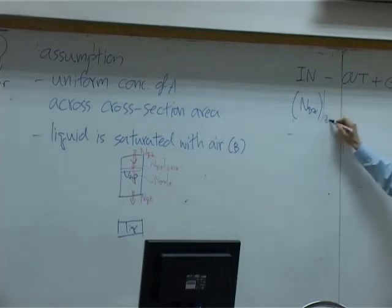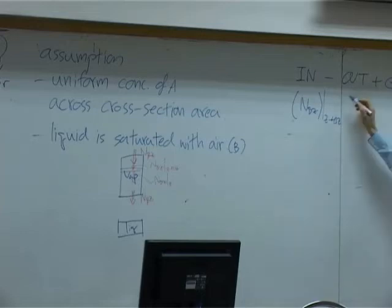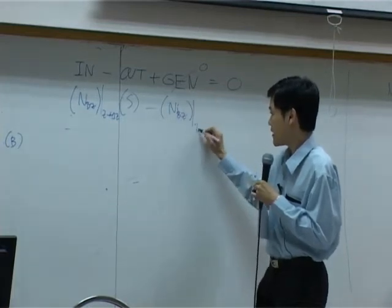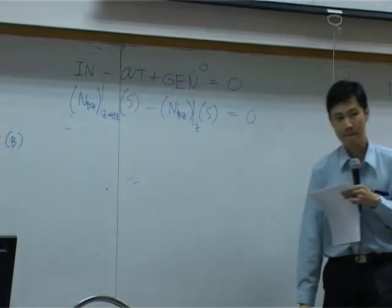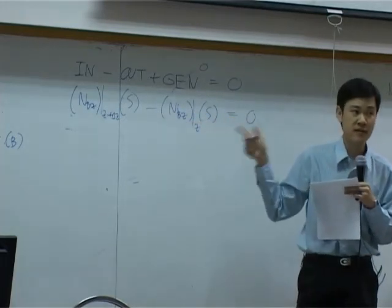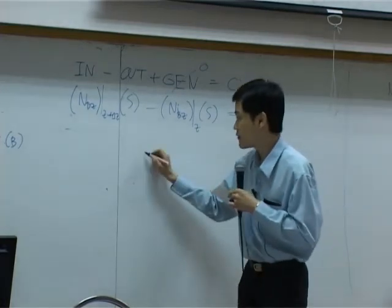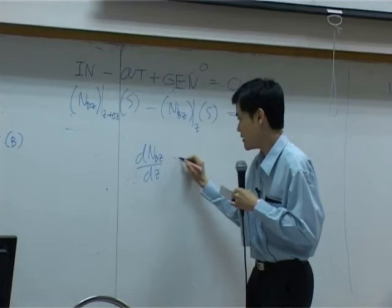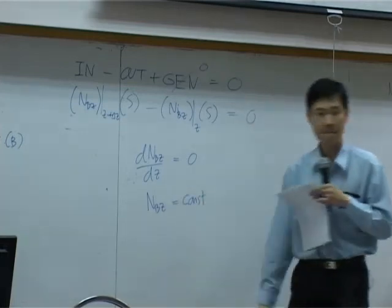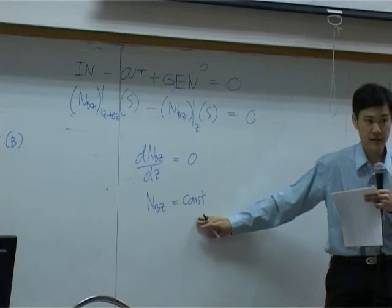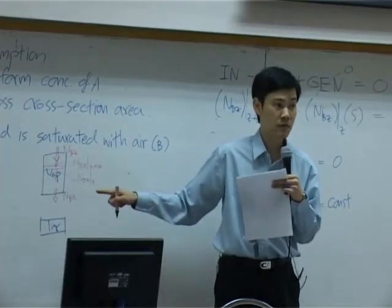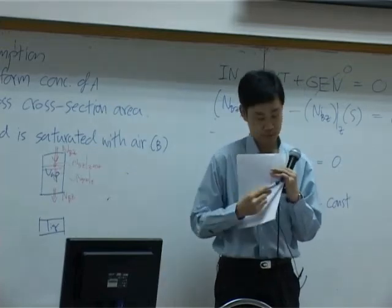multiplied by cross-section area, minus NBZ at Z times S equal to zero. You repeat the same process. Remove S from equation, divided by delta Z, takes limit. In fact, you end up with dNBZ by dZ equal to zero. Or NBZ is constant. What does it mean? It means that the flux of B up here and down here are equal. They are equal.